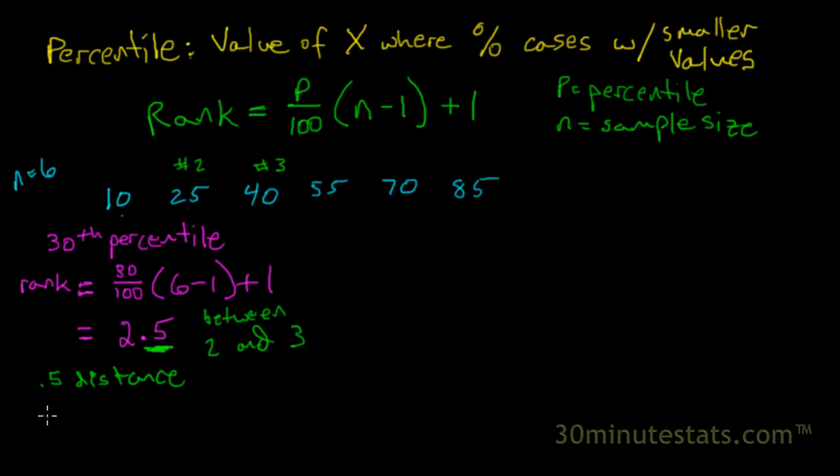We can do 0.5, and we'll subtract the second observation from the third. So 40 minus 25 times 0.5, that's going to give us 0.5 times 15, which equals 7.5. Now that we have our 7.5, we know that the 30th percentile is going to be 7.5 units between 25 and 40.